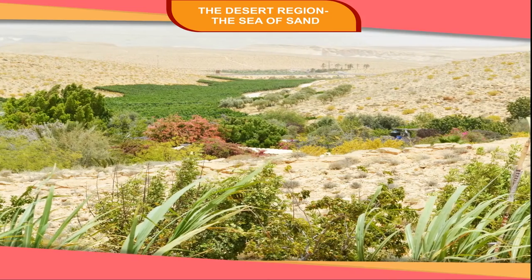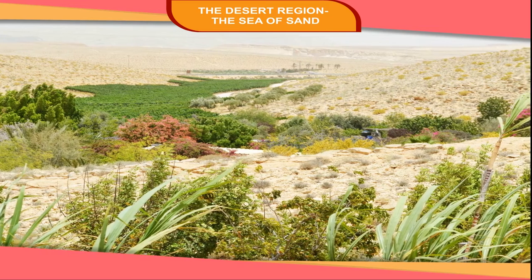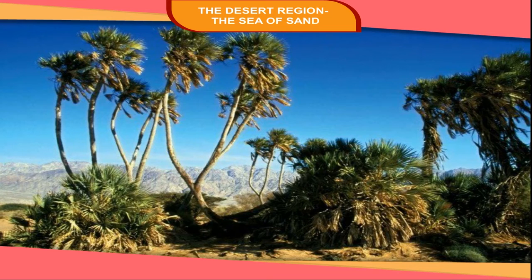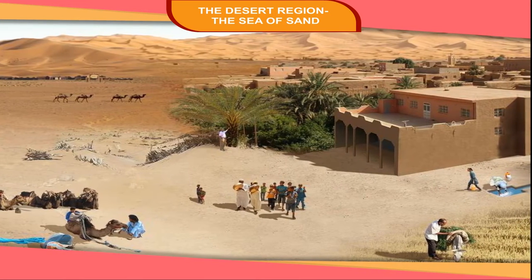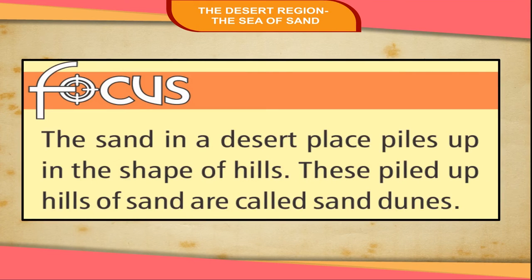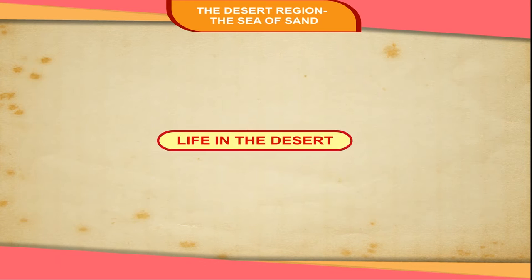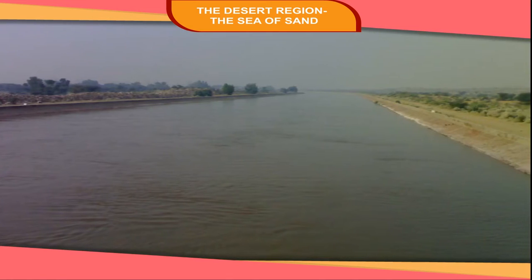Only thorny plants like kikar and cactus grow in the desert. But at some places we can find natural water marked with green grass and date palm trees. This fertile place in the desert is called an oasis. Some villages are found near oases. The sand in a desert piles up in the shape of hills, and these piled-up hills of sand are called sand dunes.